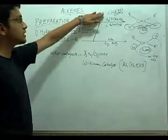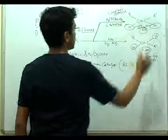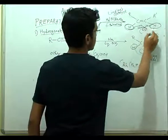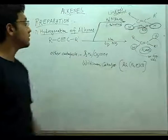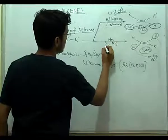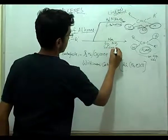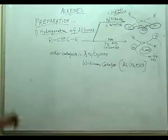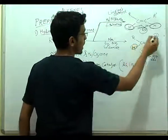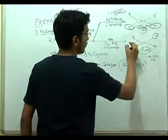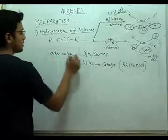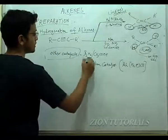Lindlar's catalyst gives only cis alkene — this is very important to remember. We can see here the hydrogen atoms are on the same side, so it is cis. If we add sodium in liquid ammonia (sodamide), then we get a trans alkene, where the two hydrogens are on opposite sides of the double bond. Other catalysts can also be used: B2L6, CS3COH, and Wilkinson's catalyst.